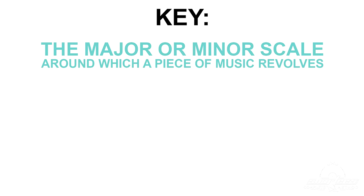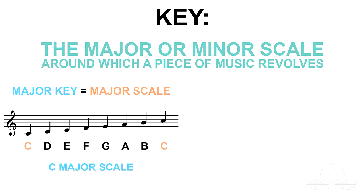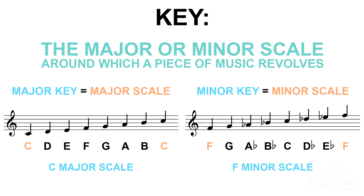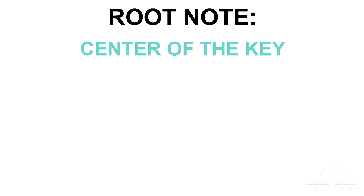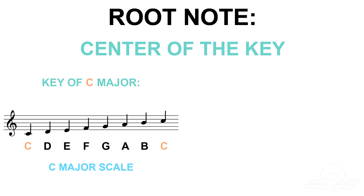A key is the major or minor scale around which a piece of music revolves. A song in a major key is based on a major scale, and a song in a minor key is based on a minor scale. Any major scale or natural minor scale can serve as a key for a piece of music. The root note is the note on which a scale is built and acts as the center of the key. For example, a song in the key of C major has its harmonic center or root note at C and revolves around a major scale.